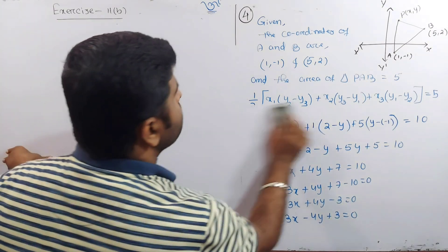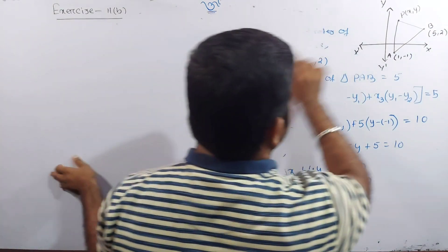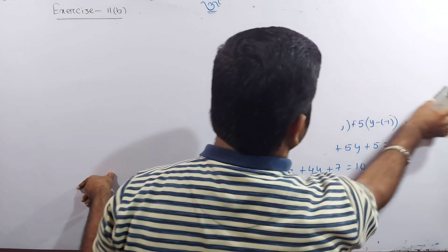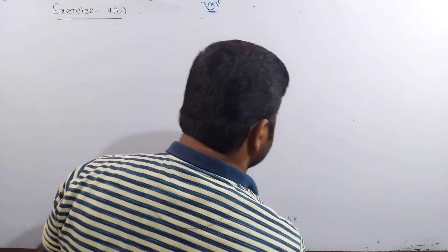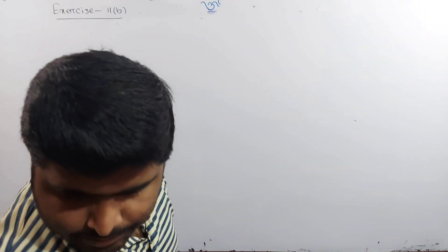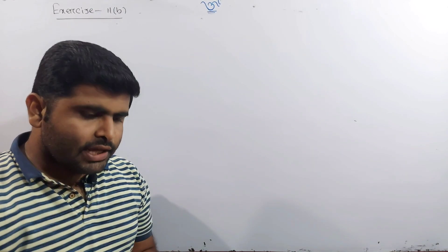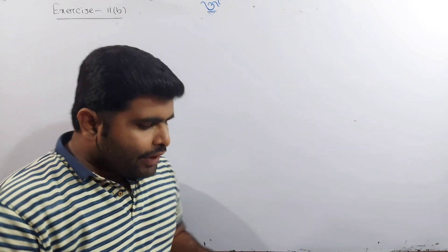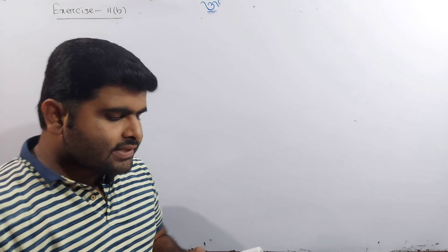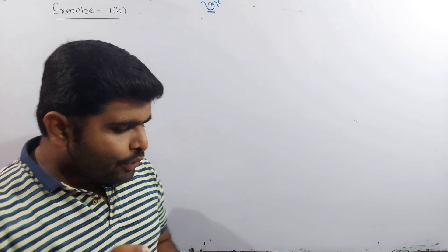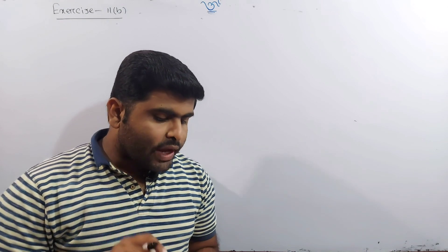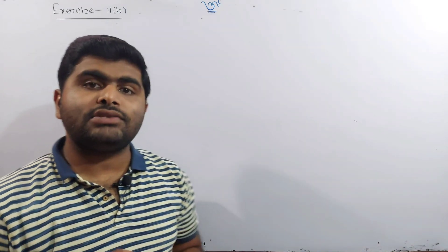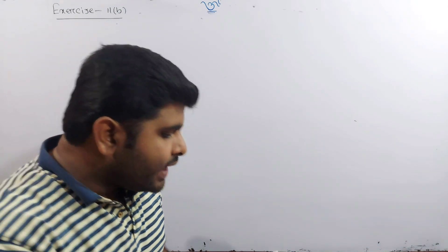Question number 5: A point is such that its distance from the point (3, 0) is twice its distance from the point (−3, 0). Find the equation of the locus.